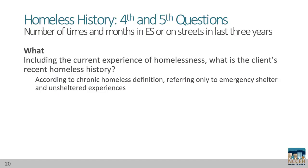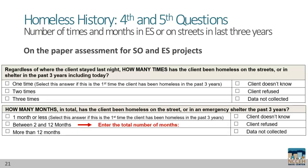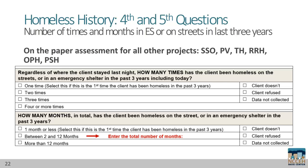The fourth and fifth questions look back further. We ask the number of times and number of months the client was in emergency shelter or on the streets in the last three years. These questions refer to the client's recent history in the context of the chronic homeless history definition, using just emergency shelter and unsheltered experiences only. As a reminder, this does not require documentation and does not count as documentation towards chronic homeless status — it's just a starting point. On the paper assessment for street outreach and emergency shelter projects, the number of times and number of months are required for all heads of households and adults no matter their previous responses. For all other project types, the number of times and months are part of section 4 and only collected based on the instructions in section 3.